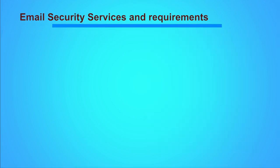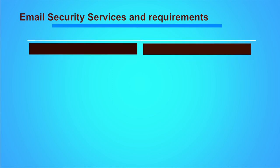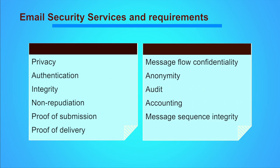Now let us focus on various security services provided and required in emailing. What are the security expectations from an emailing service? Some of the security aspects we should expect are: privacy, authentication, integrity, non-repudiation, proof of submission, proof of delivery, message flow confidentiality, anonymity, audit, accounting, and message sequence integrity.